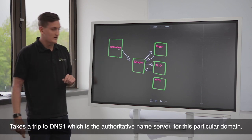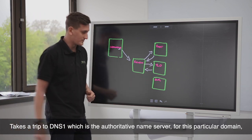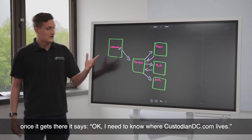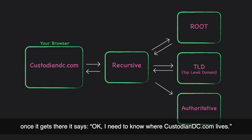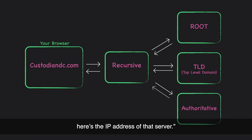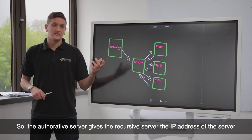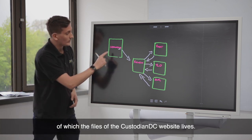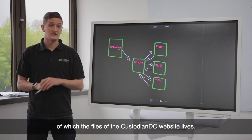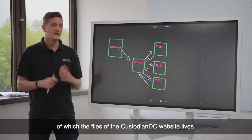It takes a trip to DNS1, which is the authoritative name server for this particular domain. Once it gets there, it says, okay, I need to know where custodiandc.com lives. The authoritative server goes, actually, yeah, I know where that is. Here's the IP address of the server. So the authoritative server gives the recursive server the IP address of the server where the files for the custodiandc.com website live.